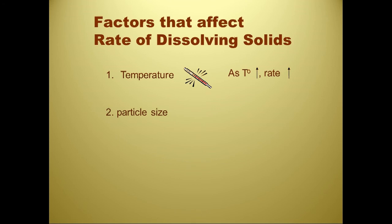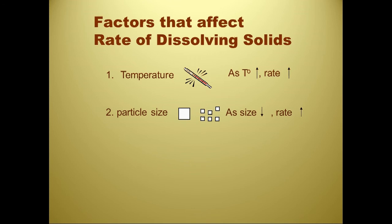Step two: particle size. Let's say we're trying to make iced tea and we pull out our five-pound bag of sugar and find it's just one big giant solid chunk. Is that going to dissolve well? The answer is no. Which dissolves better — a single large chunk or a lot of smaller chunks equal to the same weight? Now you've got more room in between for water molecules to attack and dissolve things. As the size decreases, the rate increases.